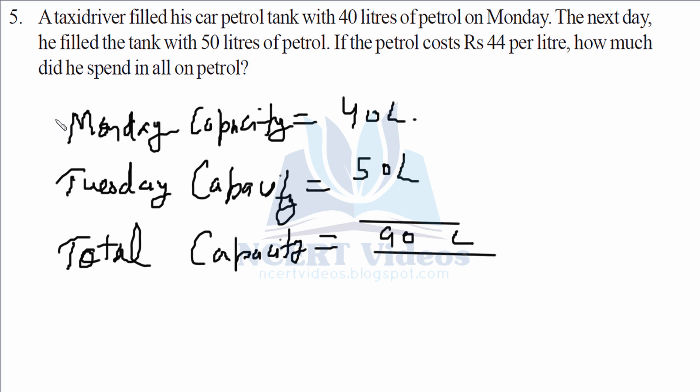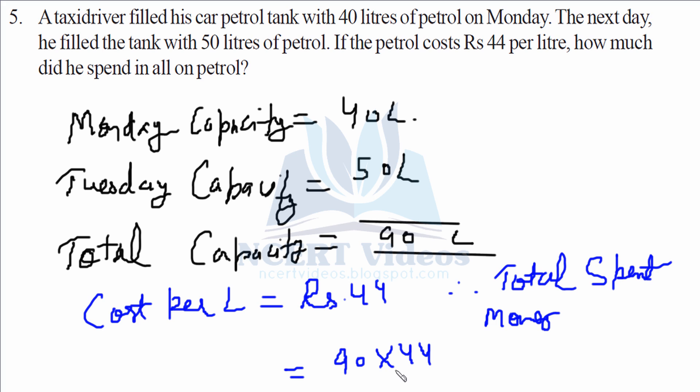Now what we are given is the cost per liter. So therefore, we will write cost per liter is Rs 44. Now it's simple, a multiplication problem. We will multiply 44 with 90 in order to get total spent money on filling the petrol. 90 into 44 would give you, when you multiply it, Rs 3,960 in two days.